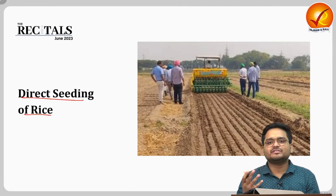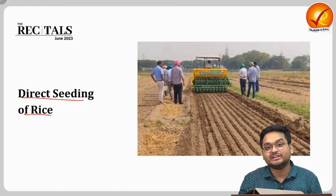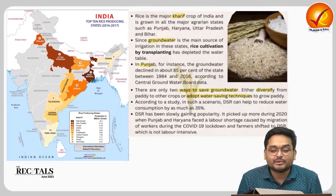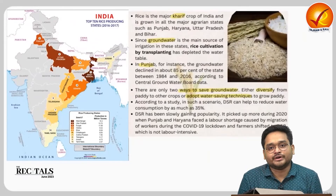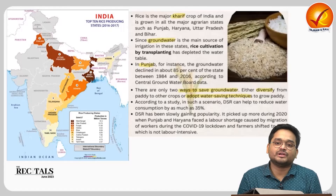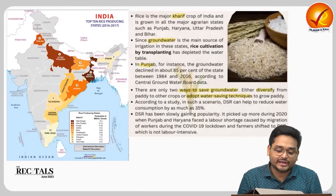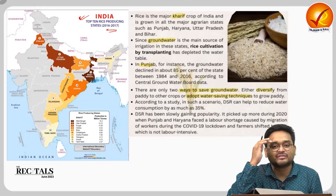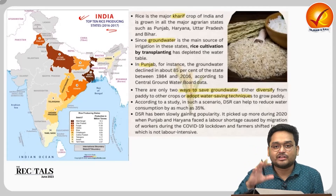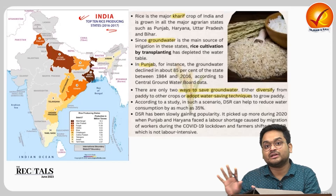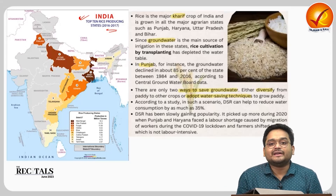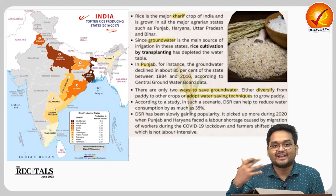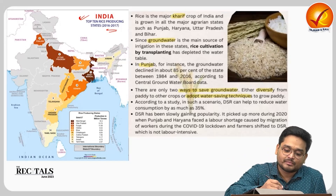Direct seeding of rice is a particular way of cultivating rice. Rice is a staple food for most of India, particularly around coastal areas and rice-producing regions. As we can see from the map here around 2016-2017, rice production increased particularly after the Green Revolution in the 1960s when the government tried to promote more cultivation of rice and wheat crops.